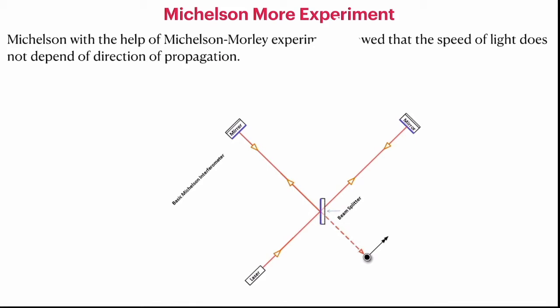The Michelson experiment was a fairly sophisticated setup. He set up a large optical bench on a mercury bed, which provided the stability needed to carefully observe fringe shifts. The interferometer floated in mercury and could be rotated to any angle. The story goes that Morley was a chemist who provided the mercury, since a large amount was needed. This experiment showed that the velocity of light is not affected by the Earth's motion, seriously questioning the concept of ether.